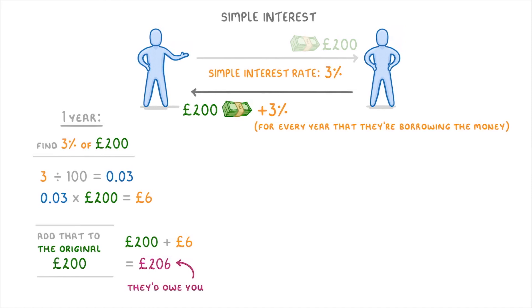Now of course, they might not have borrowed it for just one year — they may have borrowed it for a longer period. So let's find out how much they'd owe you if they kept it for two years. For this, we could just take how much they'd owe you after one year, so £206, and then add on another year's worth of interest, so add £6, which would bring the total debt to £212.